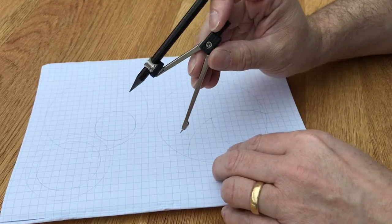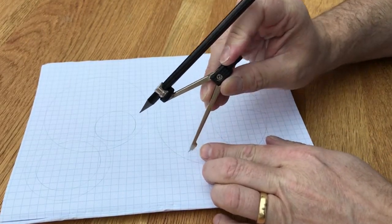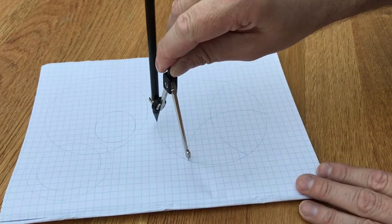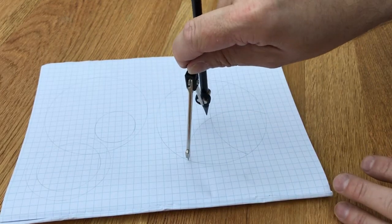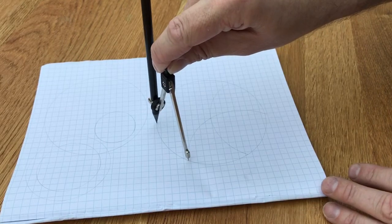And then if you just keep going, your point of your compass, this isn't a very good compass, on the point where your previous arc intersects, check that it goes exactly to the middle, and then draw another arc.